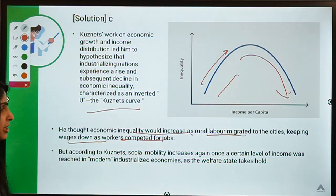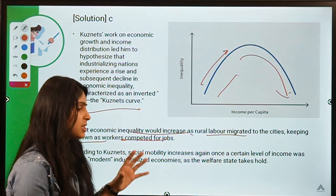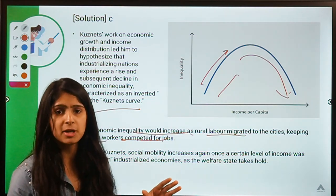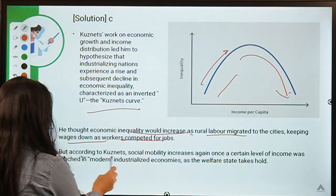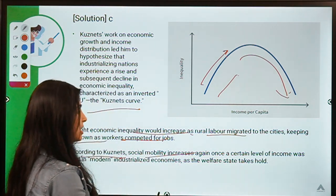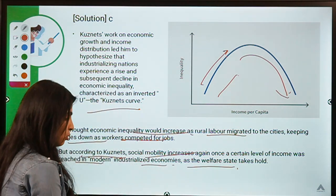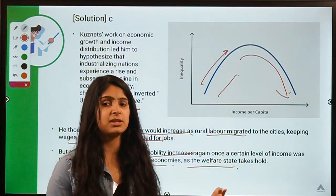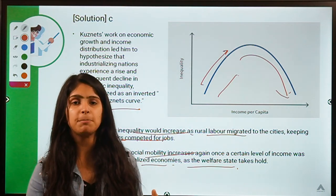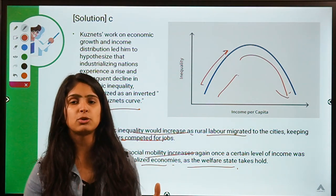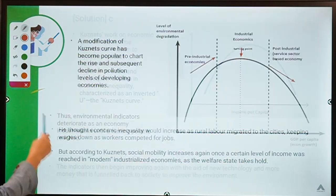Kuznets thought that with more industrialization rural labor migrates to cities, creating a continuous inflow of labor which drives down wages. But according to his research, social mobility increases again once a certain level of income is reached in modern industrialized economies, as the welfare state takes hold. Once this happens, laborers become more powerful, engage in trade unions, and try to take some proportion of the benefit toward themselves, increasing social benefit.